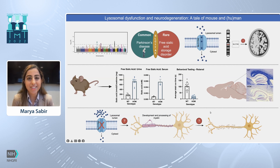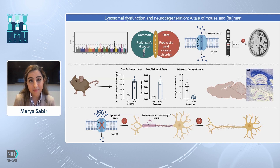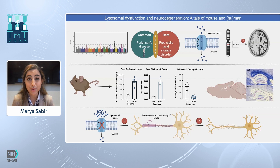While FSASD is a rare disorder, there are approximately 70 other lysosomal storage disorders, most of which present with a neurodegenerative phenotype. And while studying FSASD can help us develop potential therapies for these patients, we may also be able to help patients living with similar diseases. Thank you.